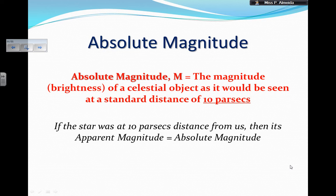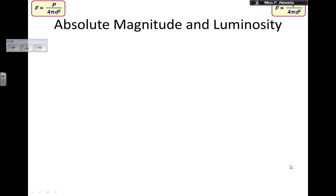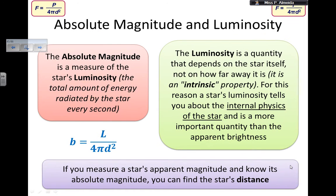The apparent magnitude depends on the distance the star is at, so it's not an absolute value. The absolute magnitude, since it always uses a standard distance of 10 parsecs, really tells me how bright the star truly is — it tells me about the luminosity. The absolute magnitude is a measure of the star's actual luminosity, the total amount of energy the star radiates every second. That means it's an intrinsic property — luminosity is a quantity that depends on the star itself, not how far away it is, unlike brightness. A star's luminosity tells you about the internal physics and the reactions happening inside the star, making it a more important quantity than apparent brightness.